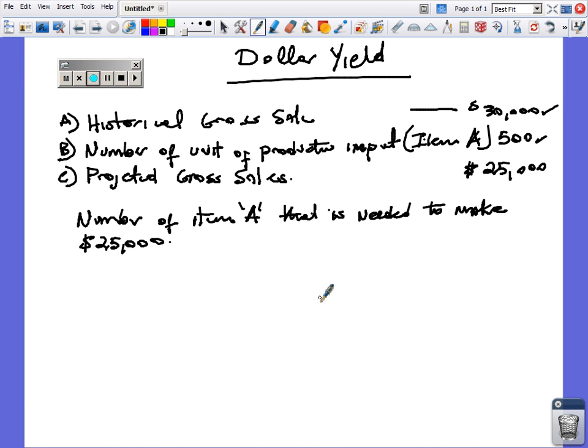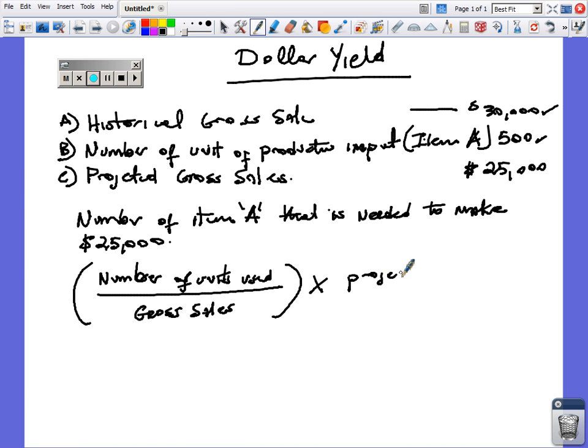Very simple formula. What we'll do here is divide number of units used by the gross sale, and in this case this is the historical information, and we'll multiply this by our projected sales.